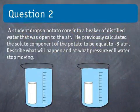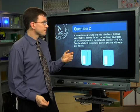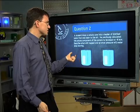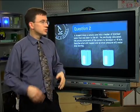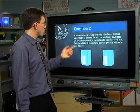Next question. A student drops a potato core in a beaker of distilled water that was open to the air. He previously calculated that the solute component of the potato is equal to negative 8 atmospheres. Describe what will happen and at what pressure will the water stop moving?